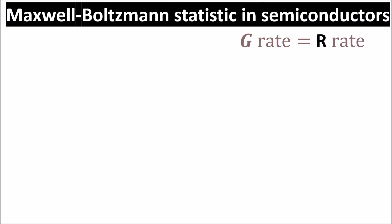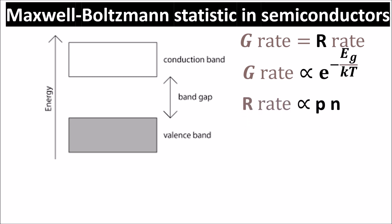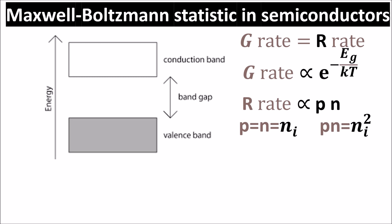Otherwise we would have a rising or diminishing number of electrons. The probability to have electrons in the conduction band, by Boltzmann statistics, is proportional to e to the power of the energy gap divided by kT, where k is the Boltzmann constant and T is the temperature in Kelvin. The recombination rate has to be proportional to the product of electrons and holes. In an intrinsic semiconductor, every electron jumping into the conduction band creates a hole, so the number of electrons N equals the number of holes P. We call this number Ni, or intrinsic carrier concentration. So P times N equals Ni squared, and the recombination rate is proportional to the square of the intrinsic concentration.